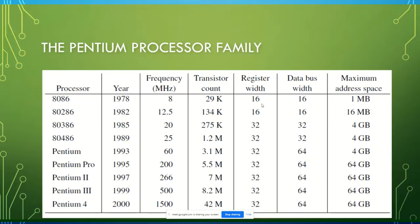Remember that registers are the fastest memory in the memory hierarchy. The wider the register, the faster the microprocessor and the more data you can access quickly. The data bus is generally double the size of the address bus — if the address bus is 32-bit, for example in Pentium 4, the data bus is typically 64-bit. But this is not a universal rule; it depends on the manufacturer. The maximum address space can be calculated from the address bus width — if the address bus is 32-bit, the maximum memory is 4 GB.